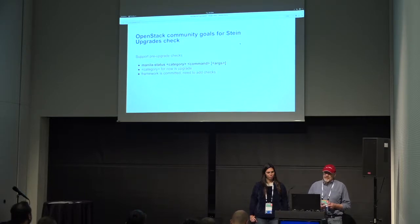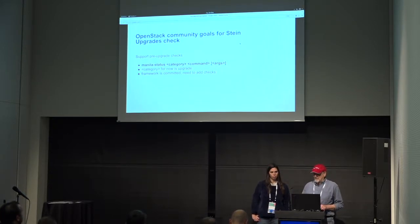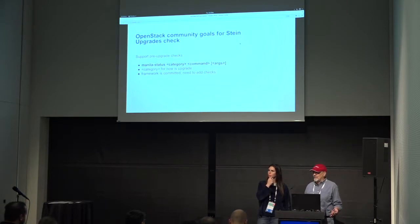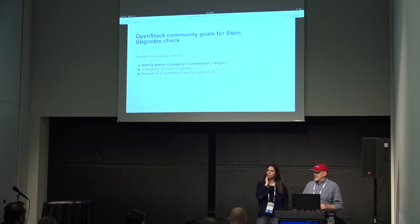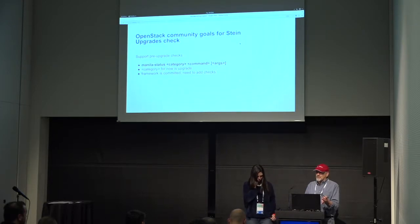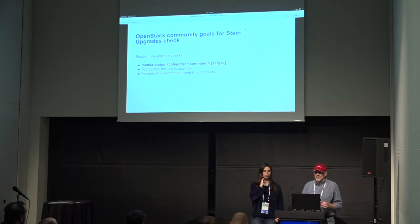Another community goal is upgrade checkers. The idea is that all projects will run 'manila status upgrade check', and it will warn you of things like config options that have changed or are deprecated before you attempt the upgrade. We always keep config options around one release even though they're deprecated, so you don't get cut off — you just get a message saying this is deprecated, please change it. The framework is committed now in our project; we need to think about what specific checks we want to put in before the end of the release, but we've technically met the goal.